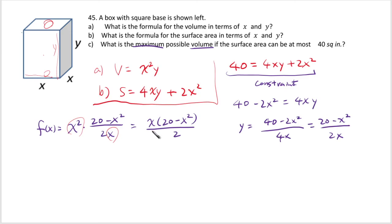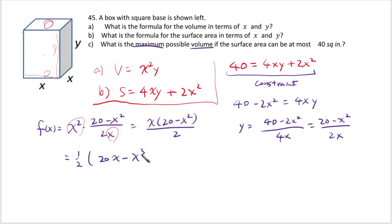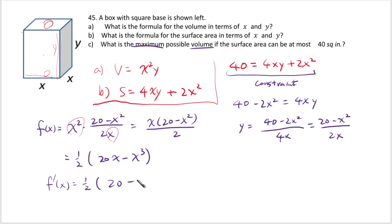We're finding the maximum with x > 0. Simplify: f(x) = (1/2)(20x − x³). Differentiating gives f'(x) = (1/2)(20 − 3x²). I multiplied out first to avoid the product rule. Set f'(x) = 0: 20 − 3x² = 0.